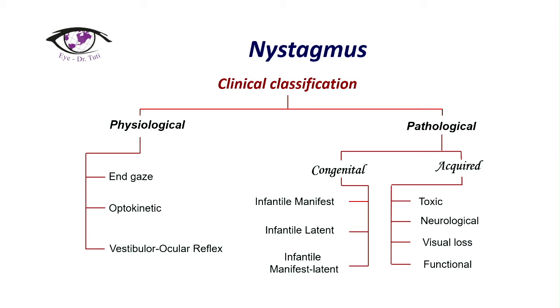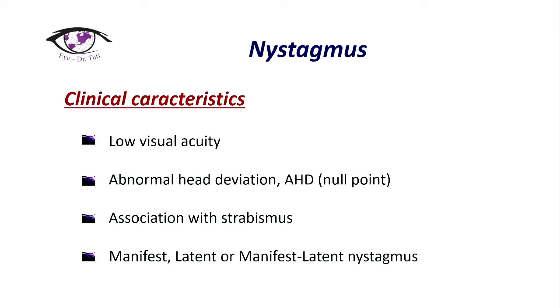In this slide we can see a clinical classification of nystagmus, which can be physiological and pathological. Pathological includes congenital and acquired, and there are a few forms of each type. Nystagmus is characterized by low visual acuity, abnormal head deviation, strabismus, and can be manifest, latent, or manifest latent. Of course, nystagmus does not always present with abnormal head deviation or association with strabismus.